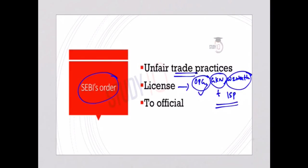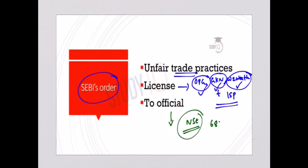Stock brokers like OPG, GKN, and Way to Wealth had unfair access to NSE servers before other investors, helping them execute orders faster. SEBI also charged several NSE top officials for colluding with brokers and not following appropriate protocols. Two former NSE chiefs were ordered to pay back a part of their past salaries as punishment. NSE was fined 687 crore plus interest, and it cannot access capital markets for six months, with its IPO delayed till year-end.